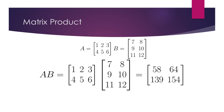Matrix multiplication is an operation which produces a matrix from two matrices. If you know how to do the dot product, matrix multiplication is simply the dot product repeated as many times as needed. Let's consider the matrices A and B. Notice that matrix A has as many columns as matrix B has rows — this is a necessary condition to obtain a matrix product of two matrices.